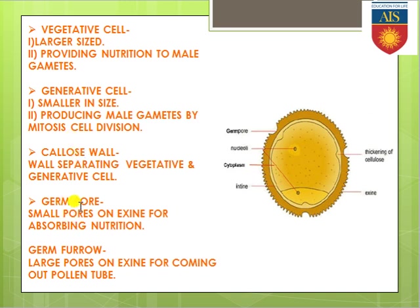The germ pore is a small pore-like structure present on the surface of the exine. This pore is present because when the pollen grain lands on the surface of the stigma, it absorbs nutrients from the surface of the stigma — those nutrients enter within the pollen grain through this specific pore-like structure.